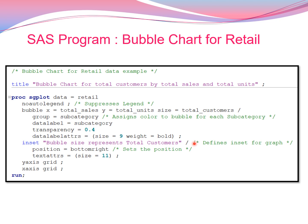We write position equal to bottom right, so the inset title appears inside the graph at the bottom right. You can also write top left, top right, or other available position options.